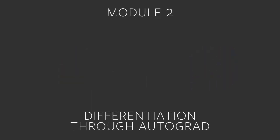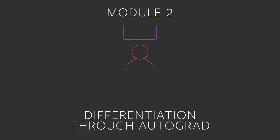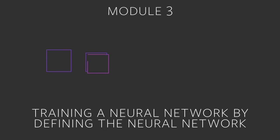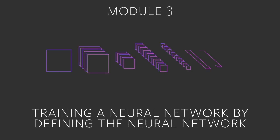In the second module, you'll learn about automatic differentiation through a PyTorch package called Autograd. In the third module, you'll follow a typical procedure for training a neural network by defining the neural network, computing the loss, and propagating gradients back into the network's parameters.